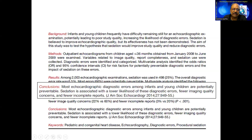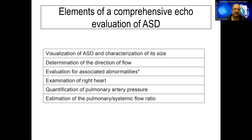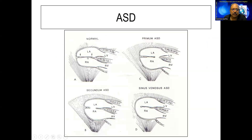Now let's talk of individual lesions at your level: ASD, VSD, PDA, endocardial cushion defect, and coarctation of aorta. In ASD we have varieties: primum ASD, secundum ASD, and sinus venosus type of ASD. The hole at the level of fossa ovalis is known as secundum ASD. The hole closer to the atrioventricular valve is known as primum ASD. The hole away from the AV valve is known as sinus venosus ASD.